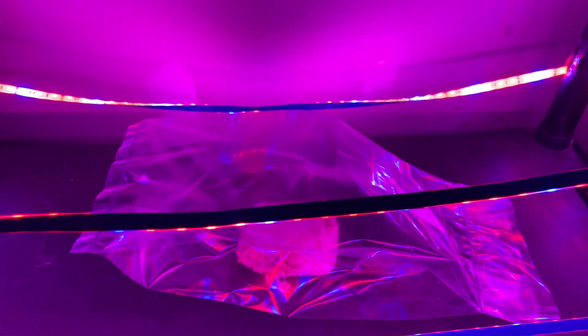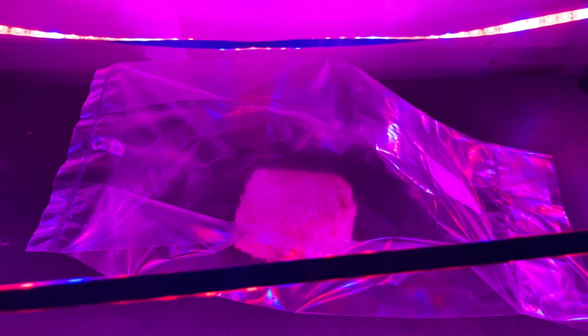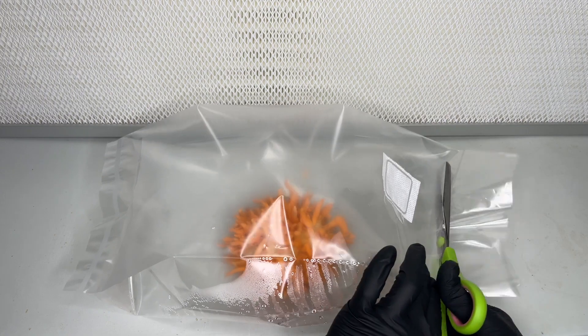The bag is then placed under red and blue LED lights for 12 to 24 hours per day for 50 days. After 50 days the cordyceps is ready to be harvested.